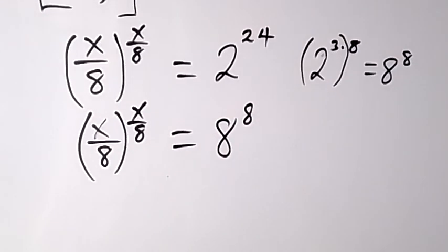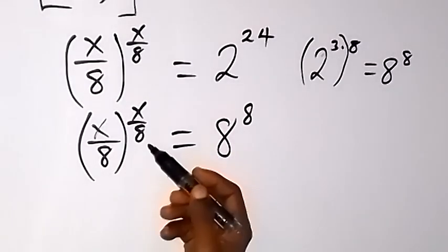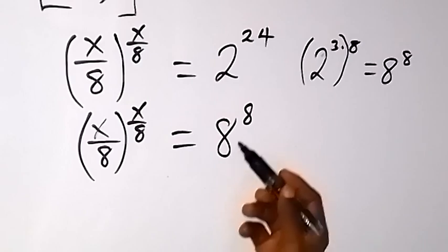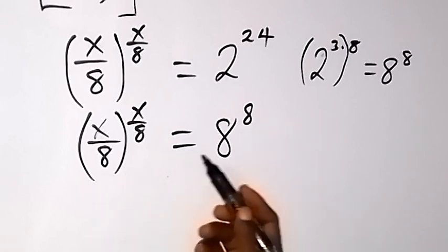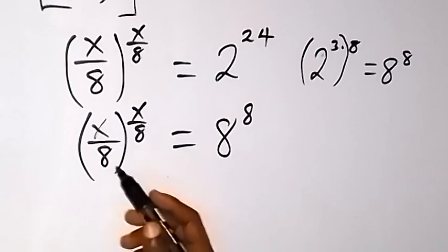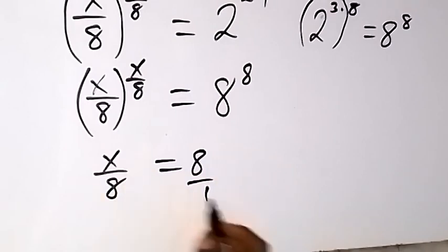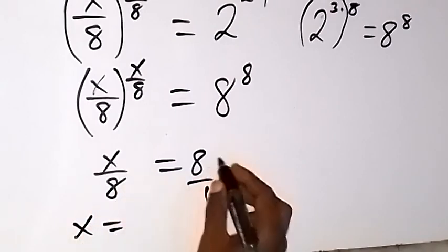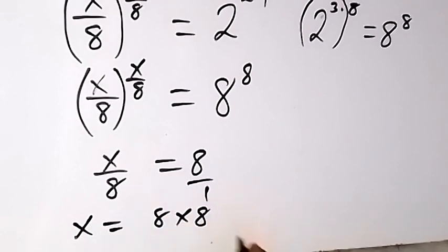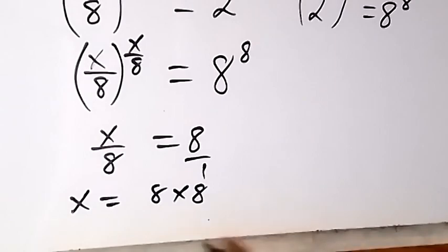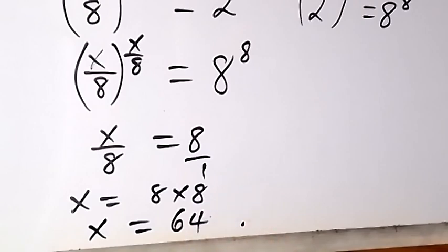This will become equals to 8 raised to power 8. From here we can see that we have a number raised to the power of the same number on both sides. So we can equate them: x over 8 equals 8. To find x, we cross multiply and we have x equals 8 times 8, which gives us 64. Therefore x is equal to 64, and that's the solution to this problem. Thank you for watching, don't forget to subscribe to this channel for more videos. See you in the next class.